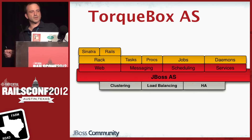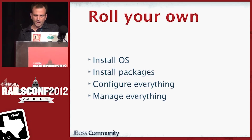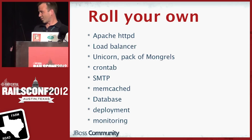TorqueBox is built on top of JBoss. JBoss exposes a bunch of Java-based APIs for messaging, scheduling, services, and that sort of thing. TorqueBox layers a thin Ruby API on top of all that to make it available to your Ruby applications. If you're going to roll your own, you're going to install an operating system, a bunch of packages, configure everything, and manage everything yourself.